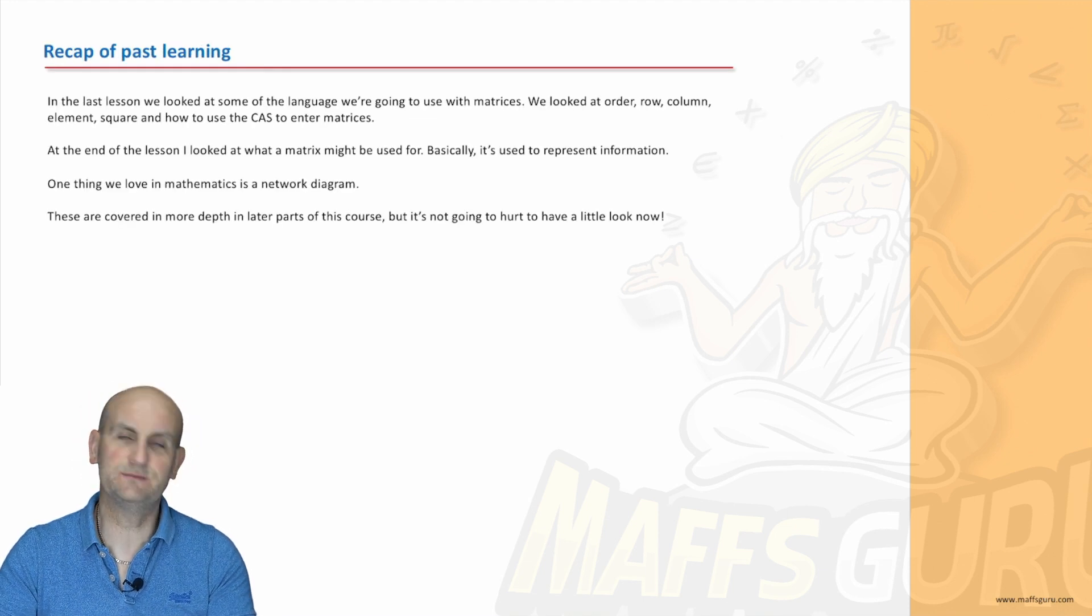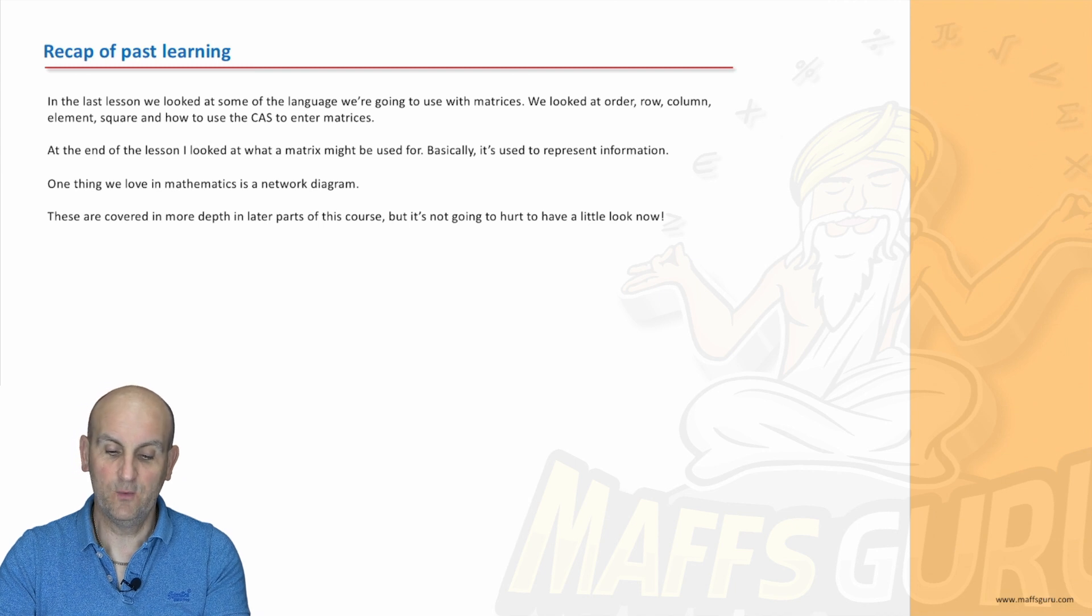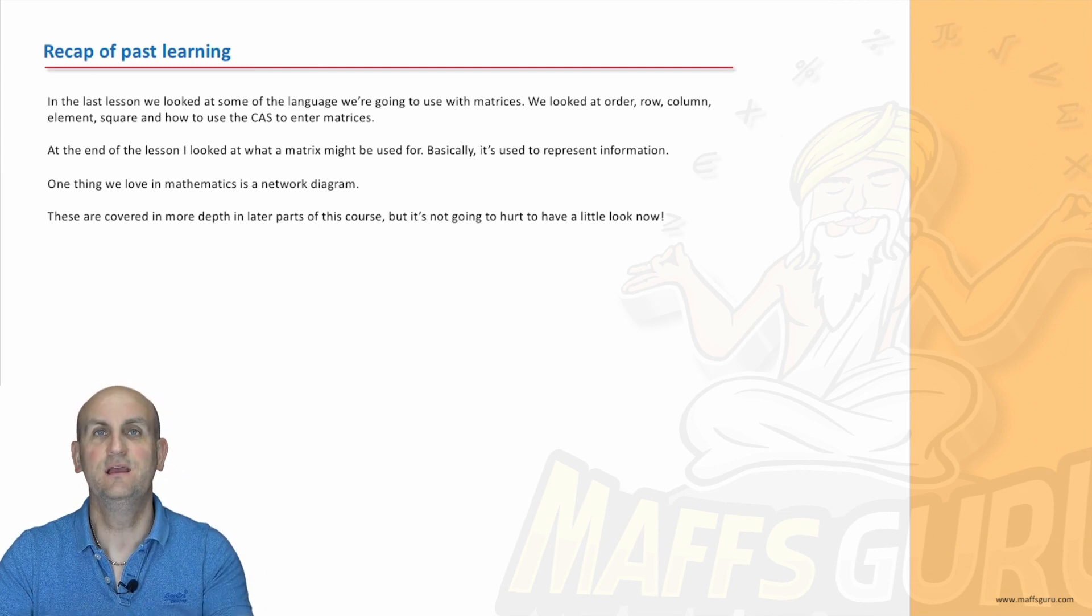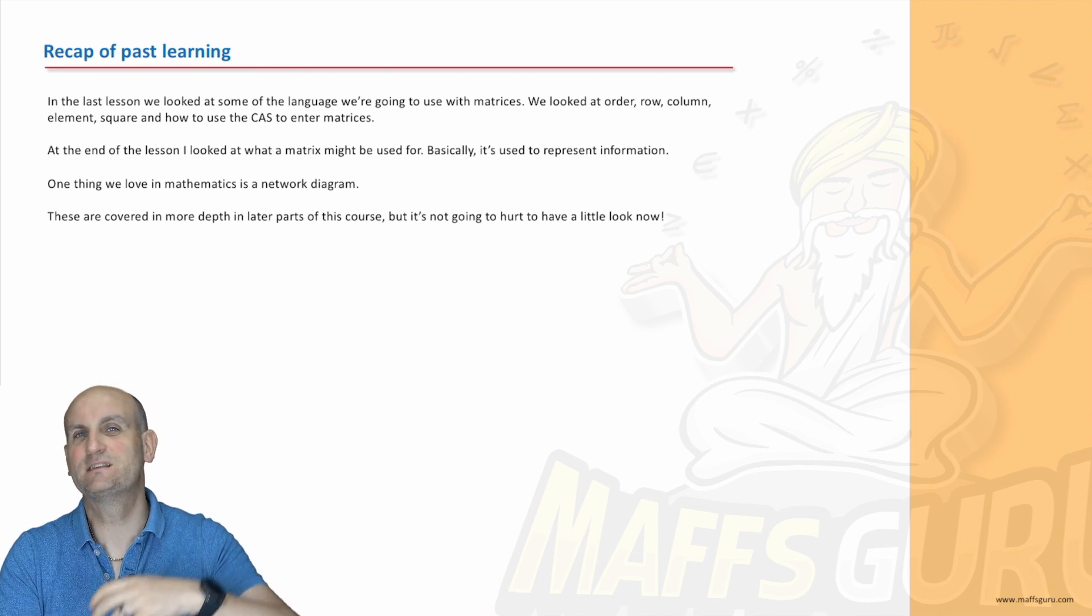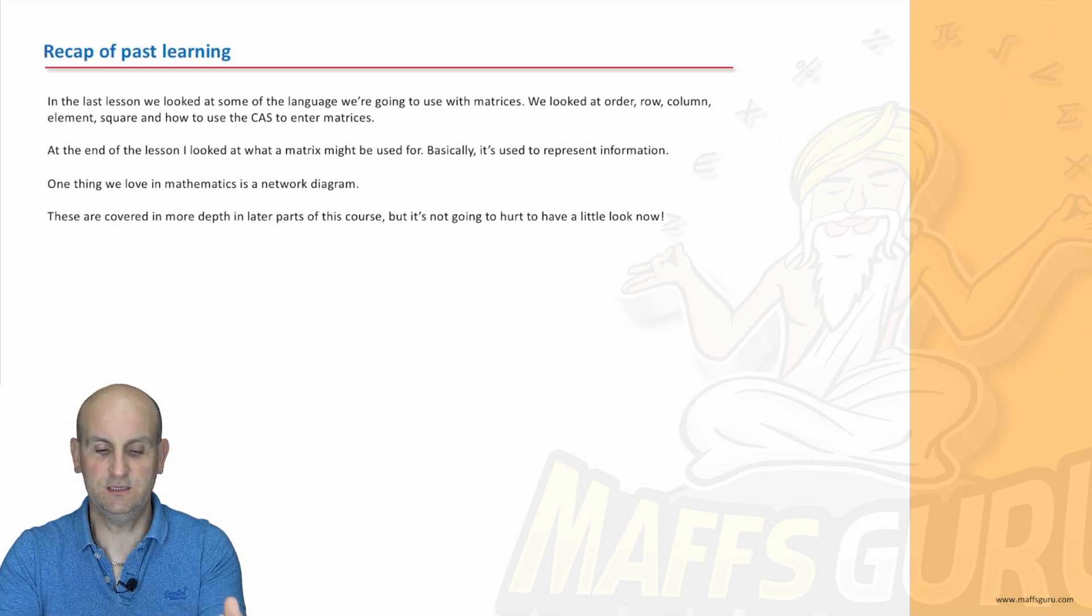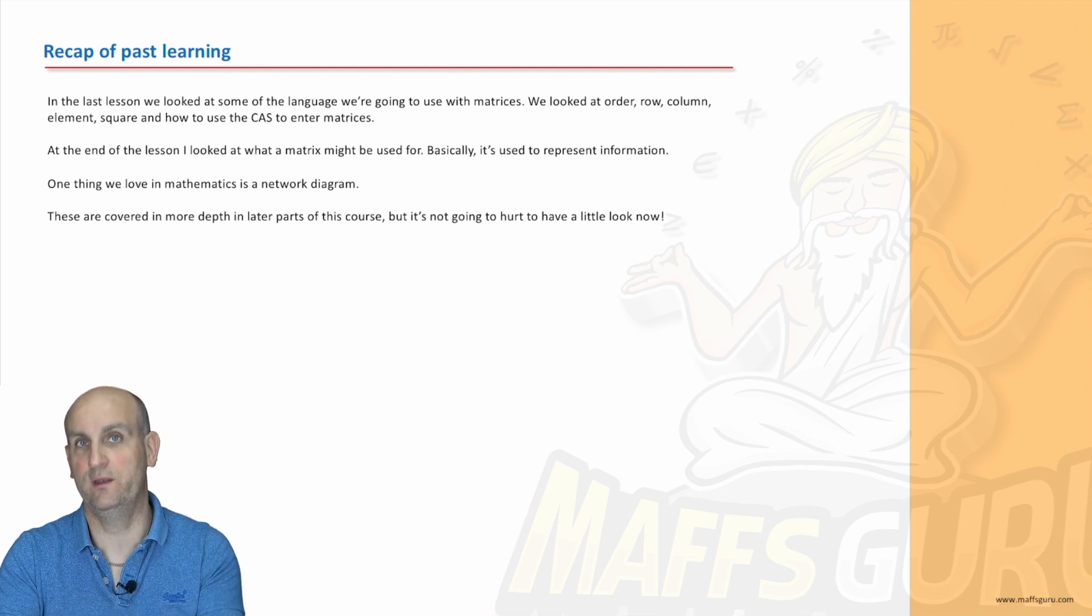Okay so in the last session we looked at some of the language we use for matrices. We had order, row, column, element, square, how to use a CAS to name but a few. Alright now all of that language is really really important but so is what we do in matrices. We're actually going to use them today with a network diagram.